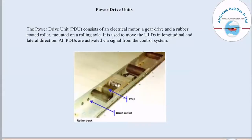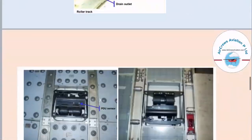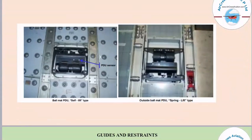Next are the power drive units. The power drive unit consists of an electrical motor, a gear drive, and a rubber-coated roller mounted on a rolling axle. It is used to move ULDs in both the longitudinal and lateral directions. Here we can see a close view of the PDU sensor, which catches signals from the controls and responds accordingly.